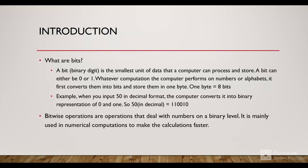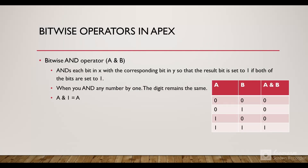So let's discuss what are bitwise operations. Bitwise operations are operations that deal with numbers on the binary level. They are mainly used in numerical computations to make the calculations faster. We have some bitwise operators in Apex. The bitwise AND operator is represented by the ampersand symbol — A & B. What this operator does is it ANDs each bit in X with the corresponding bit in Y so that the result bit is set to 1 if both the bits are set to 1.